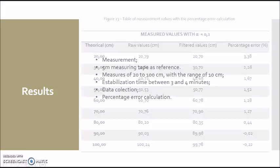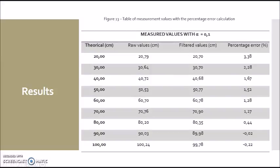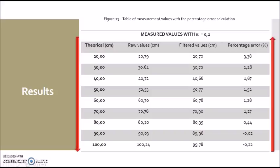Then, the calculation of the percentage error between the filtered values and actual values was made to analyze the accuracy of the measures. A table with the actual measurement, the raw value, the filtered value, and the error value for each of them was built. It was observed that the error value decreased as the distance between the sensor and the obstacle increased.